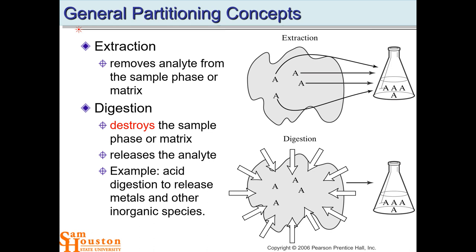One way to extract the analyte from the matrix is by gas phase: if your analyte is more volatile than the matrix, you can just warm it up, take the headspace gas off, and you've partitioned it into gas phase and liquid phase.